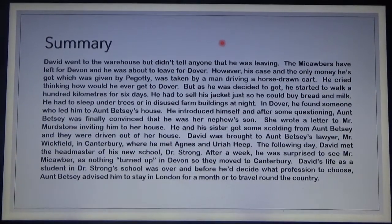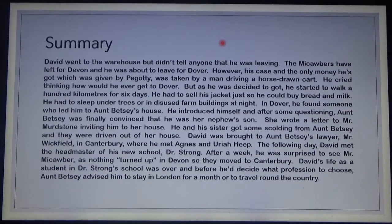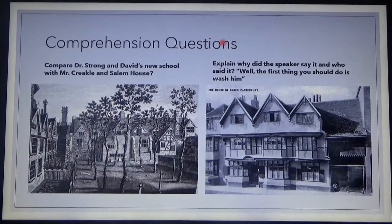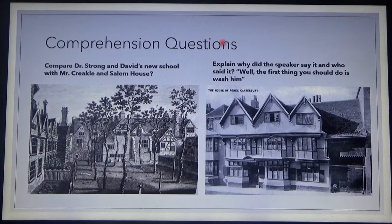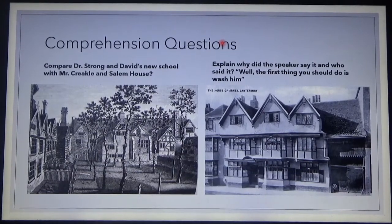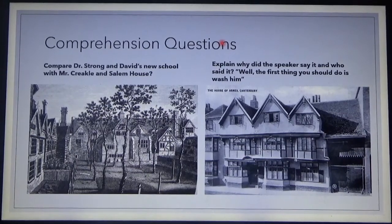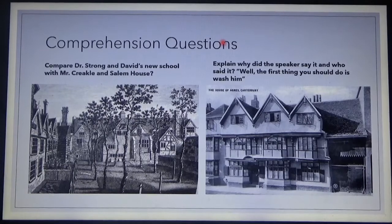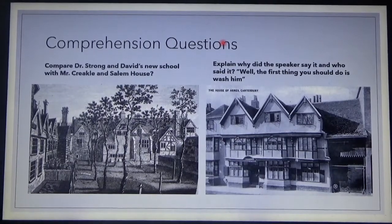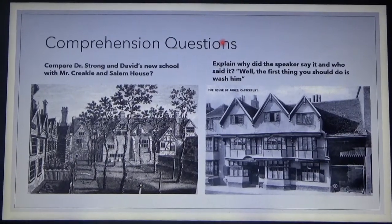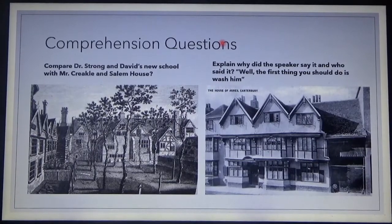So that's what the chapter is all about. We may answer the comprehension questions on this slide. The first question is: compare Dr. Strong and David's new school with Mr. Crickle and Salem House. You're going to write the answer to this question together with the other one: explain why did the speaker say it and who said it — 'The first thing you should do is wash him.' With these two questions, I'm expecting you to answer them and, like before, answer them and send a screenshot of your answer in the notebook or write in your copybook to our Discord group via direct messaging.